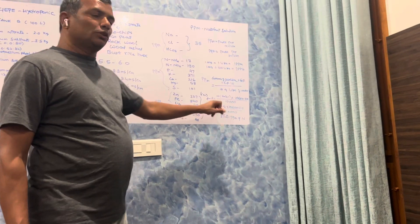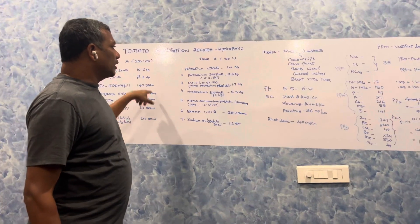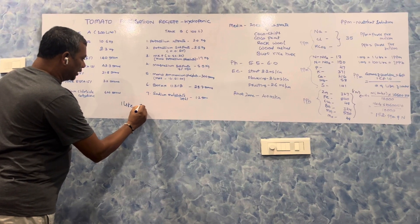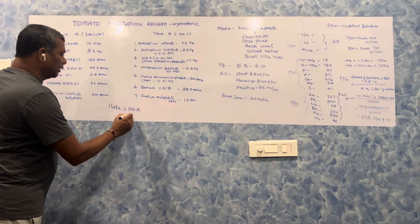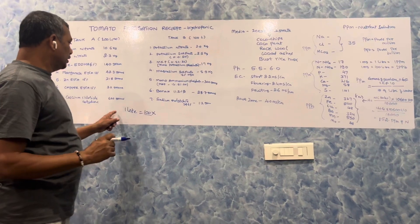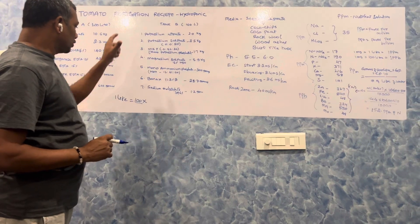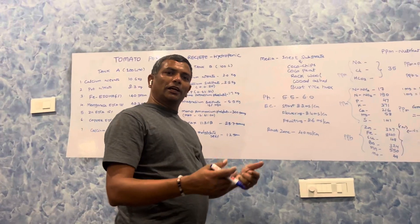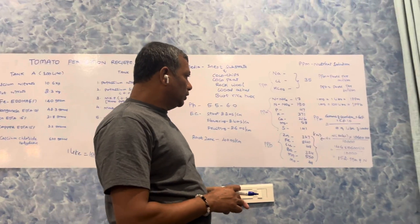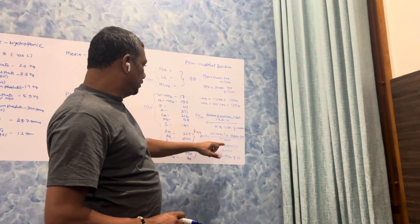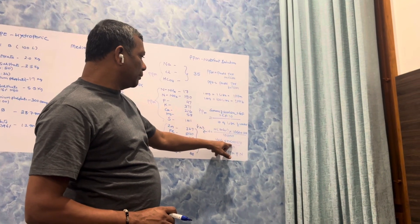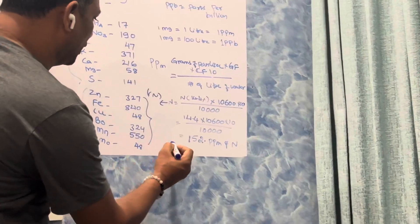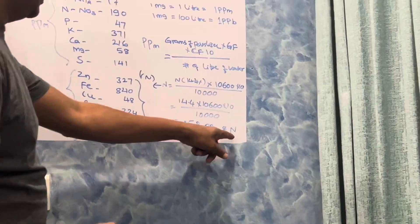The final dilution will be 10,000 liters of water. We are using the stock solution, which is 100x (one liter in 100 liters). This is our concentrated stock. Final dilution is 100 times more, so 10,000 liters. If you calculate 14.4 times 10,600 grams times correction factor 10 divided by 10,000 liters, we get 152 PPM of N present in this.